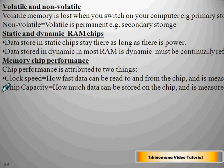Memory chip performance is attributed to two things: clock speed and chip capacity. Clock speed is how fast data can be read to and from the chip, and is measured in hertz. Chip capacity is how much data can be stored on a chip, and is measured in megabytes, kilobytes, etc.